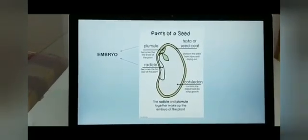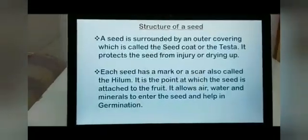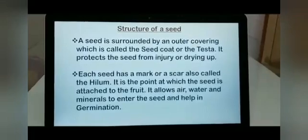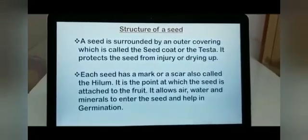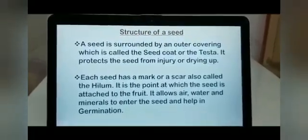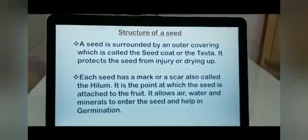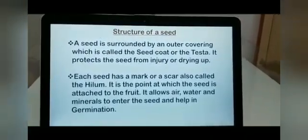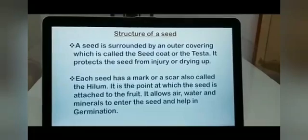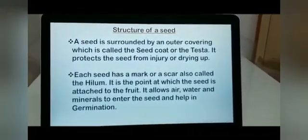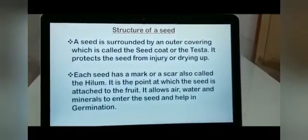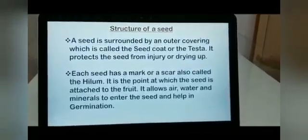Let's understand these parts better. A seed is surrounded by an outer covering also called the seed coat or Testa, and as said, it protects the seed from injury or drying up. Now children, if you observe a seed, you will find a mark or a small dark patch on the seed. That is the hilum. It is the point at which the seed is attached to the fruit. It allows air, water and minerals to enter the seed and help in germination.